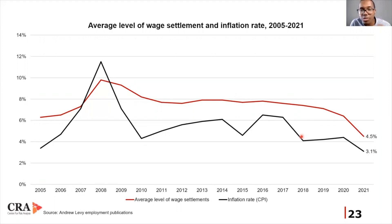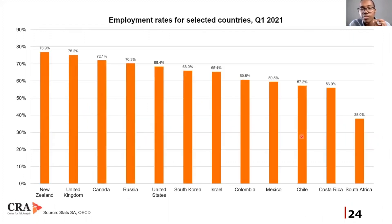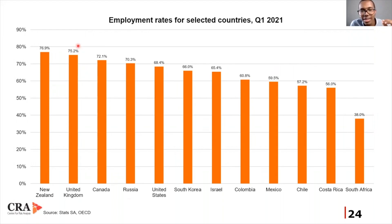Unfortunately, the aspirations as well as the top priority of the average South African are not aligned with the policies of the ruling government. The consequence of this is that in terms of employment levels, South Africa becomes a laggard of both developed and emerging markets — with a near 40% employment level compared to Mexico's close to 60%, and far below developed markets at 75%.